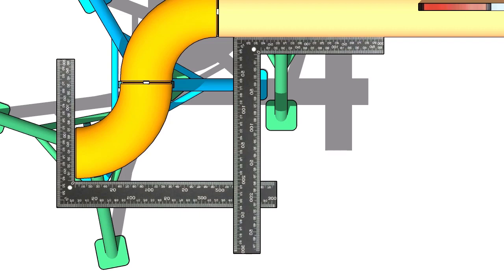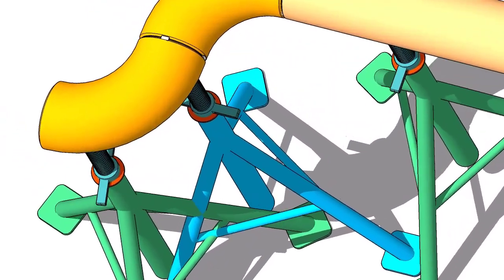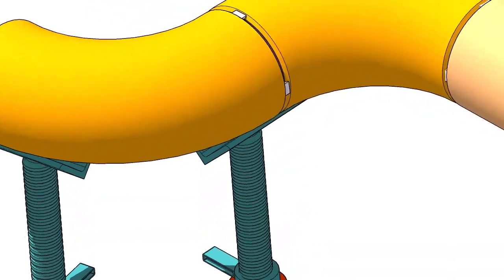Hold two right angles, one on the face of the elbow and one on the pipe side. Now use another right angle and check the squareness. Tack weld on both sides of the elbow.